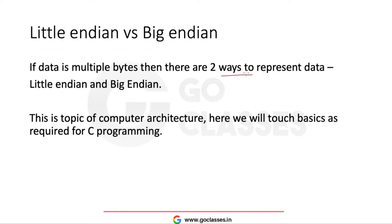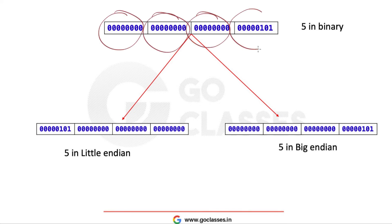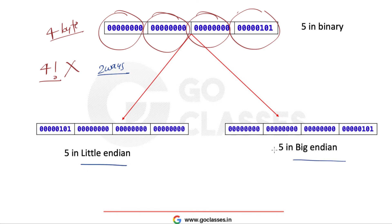If data is multiple bytes, there are two ways to represent it: little-endian and another is big-endian. This topic is from computer architecture; we will just touch the basics as required for C programming. Suppose you have the number 5 — in binary, 5 can be represented in 32 bits. Since it is clearly multiple bytes, you have two ways to store it. There are only two ways, not four factorial or something — one is called little-endian and another is called big-endian.